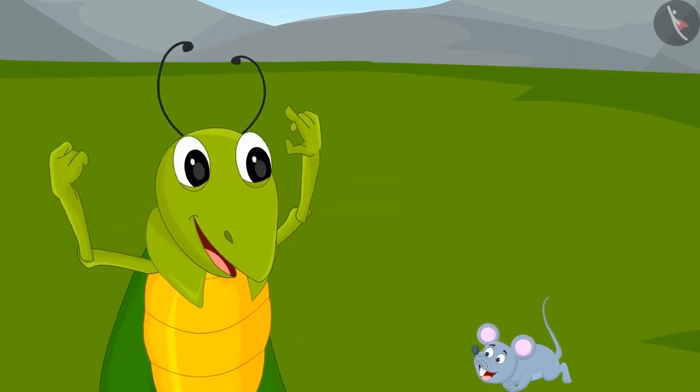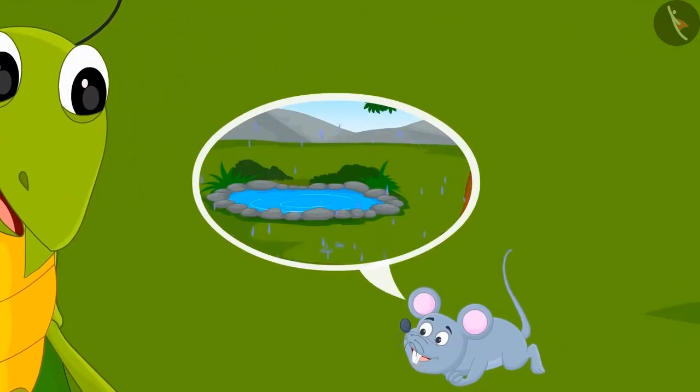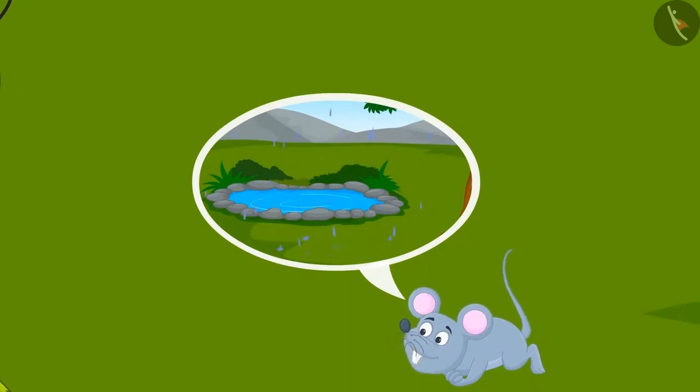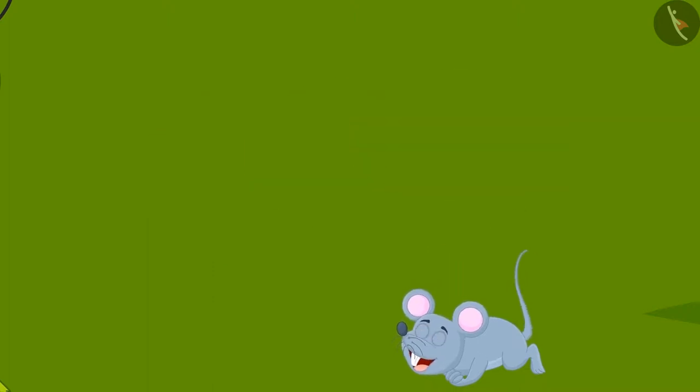This time Tinku asked a rat why they were collecting food. The rats continued to walk and told Tinku that the rainy season will be here soon and they will find it very difficult to find food in that season. So the ants and the rats were gathering food for the rainy season.